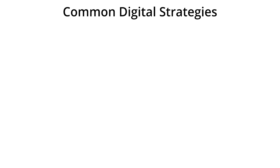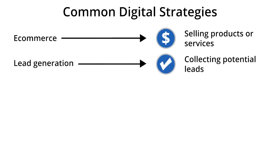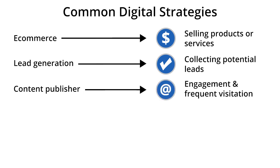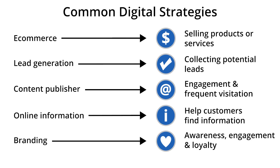Remember, each business will have its own set of strategies, but most of them will closely relate to these five common types: for e-commerce sites, selling products or services; for lead generation sites, collecting potential leads; for content publishers, encouraging engagement and frequent visitation; for online information or support sites, helping users find the information they need; and for branding, driving awareness, engagement, and loyalty.